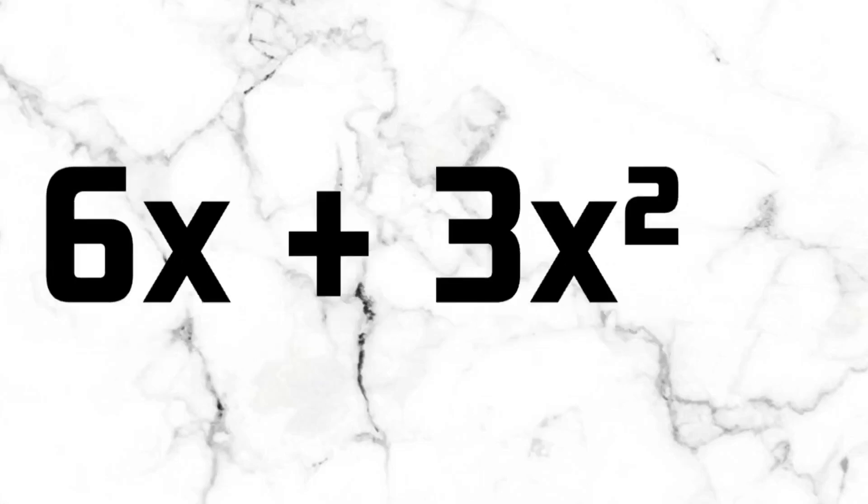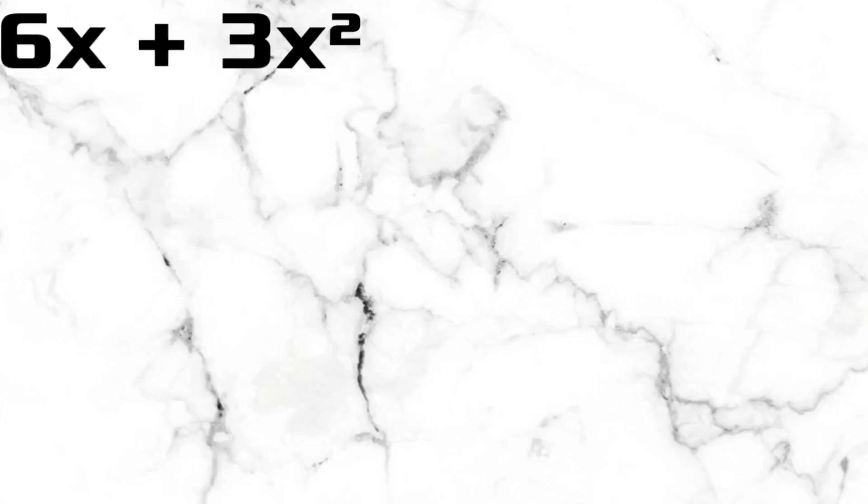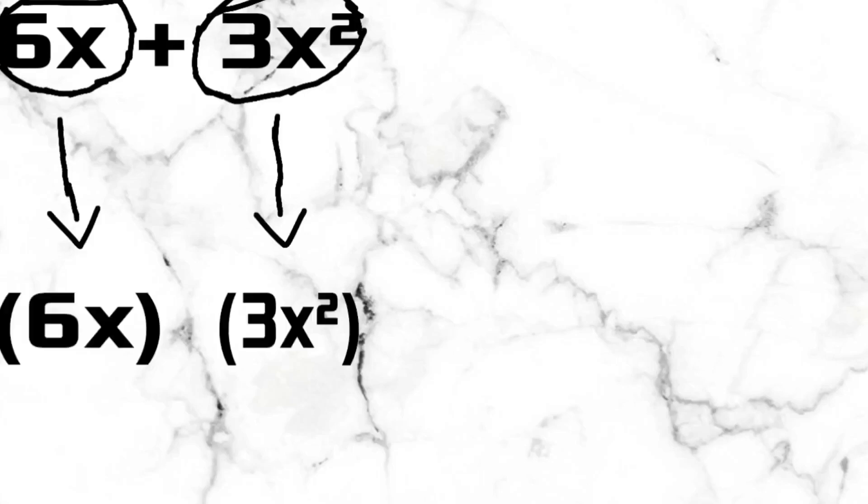So first, let us determine the number of terms of 6x plus 3x squared. Correct! It has two terms: 6x and 3x squared.